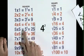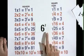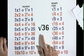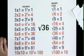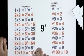4 squared is 16. 6 squared is 36. Square root of 36 is 6. 9 squared is 81.